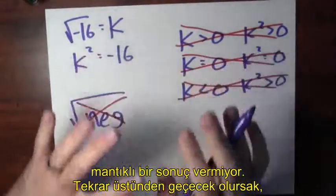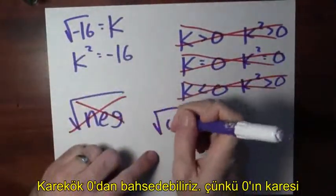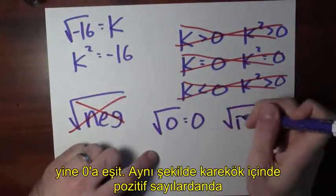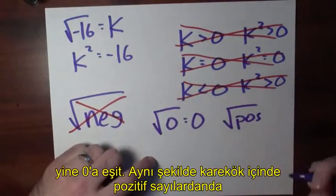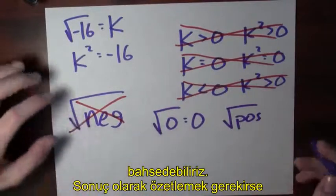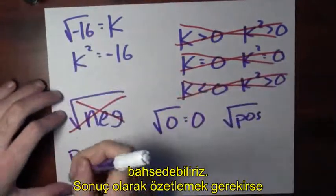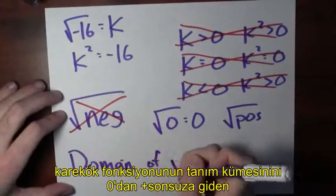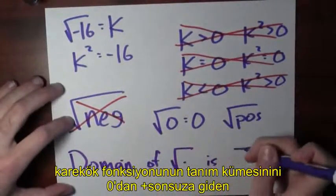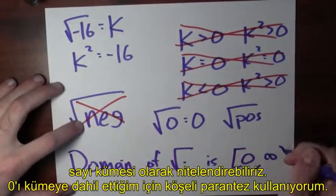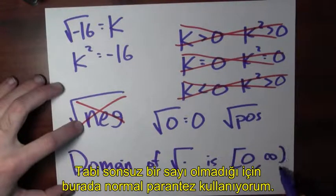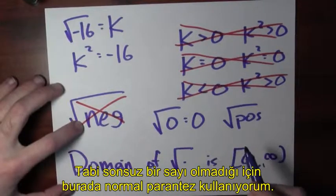In contrast, it does make sense to talk about the square root of 0, which is just 0 — 0 squared is 0. And it also makes sense to talk about the square root of positive numbers. To summarize, the domain of the square root function is all numbers between 0 and infinity, including 0 (using a square bracket), but not including infinity, because infinity is not a number.